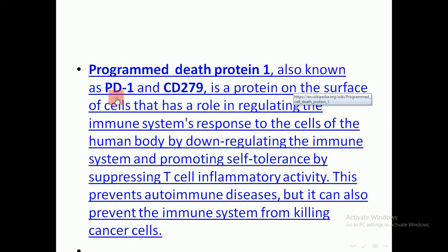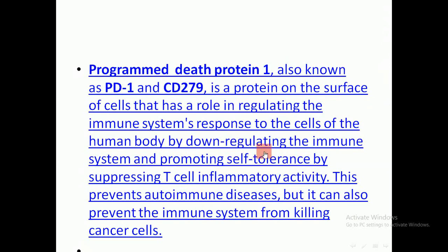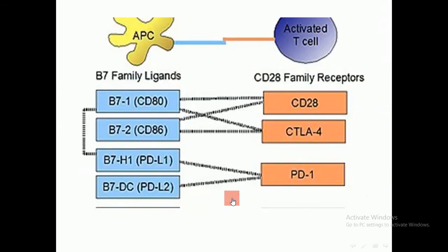PD-1, also known as programmed death protein-1 and CD-279, is a protein on the surface of cells that regulates the immune system's response to cells of the human body. By downregulating the immune system, PD-1 acts as a second inhibitory signal to T lymphocyte activation, promoting self-tolerance by suppressing T cell inflammatory activity. This prevents autoimmune disease but also prevents the immune system from killing cancer cells.